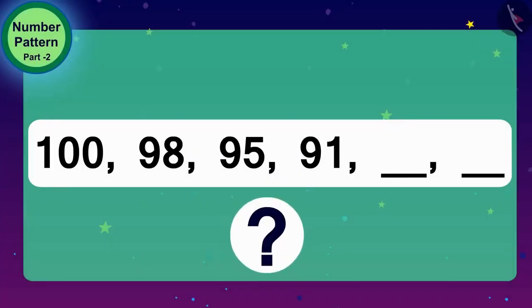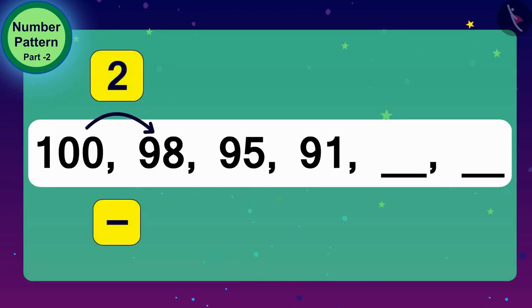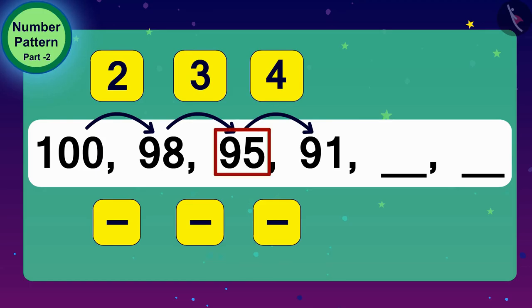What do we have to do to get 98 from 100? Yes, we have to subtract 2 from it. And what will we do to reach 95 from 98? We will subtract 3 from 98. Now, what do we have to do to get 91 from 95? All right, we have to deduct 4 from 95.